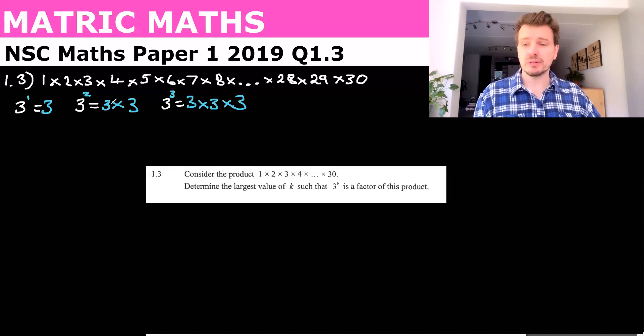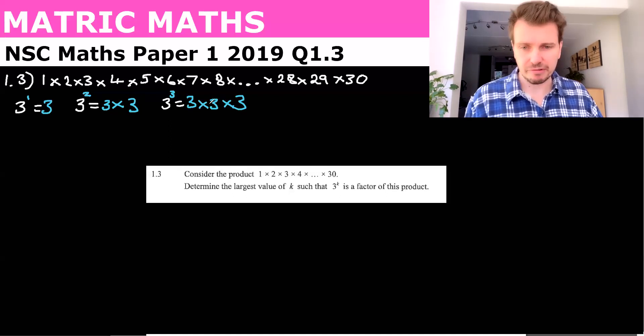Now if k was 2, it would be 3 times 3. If k was 3, it would be 3 times 3 times 3. So whatever k is, that's how many times you multiply 3 by itself.